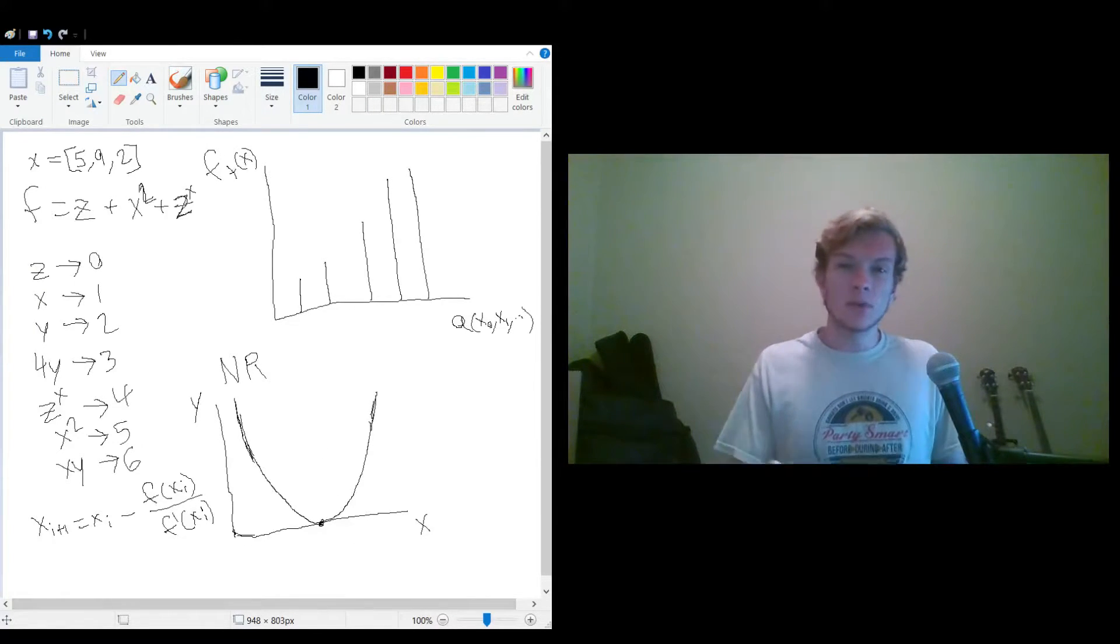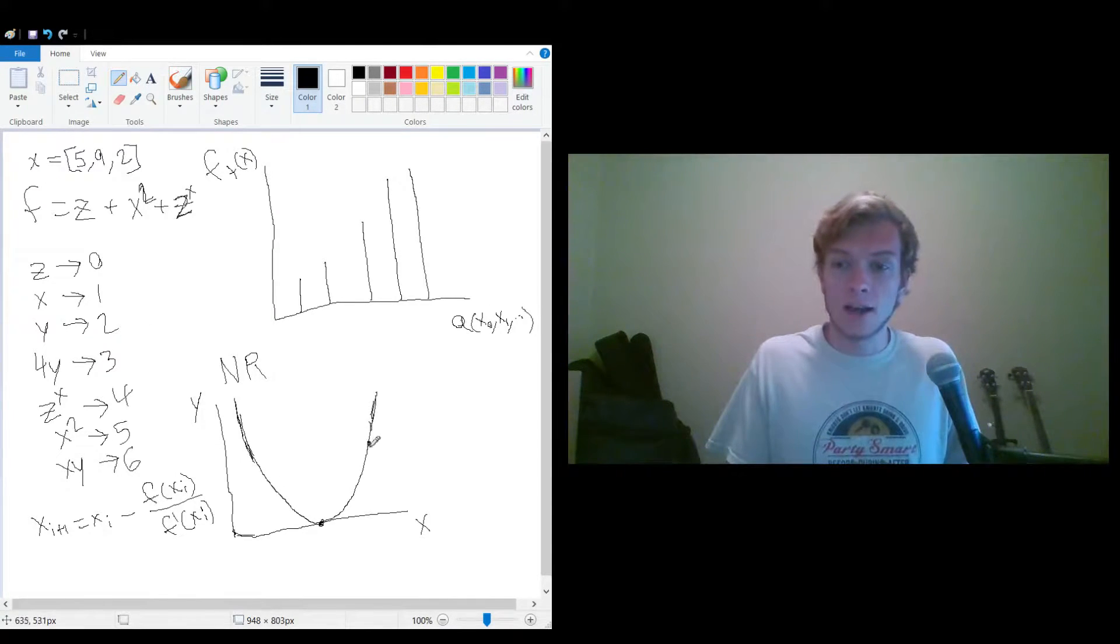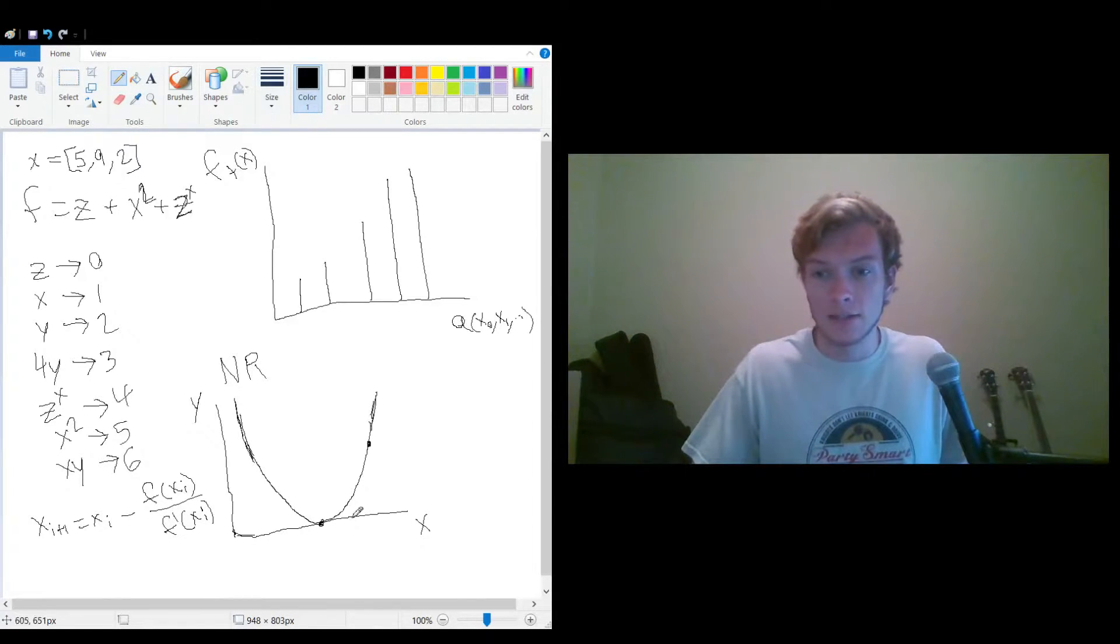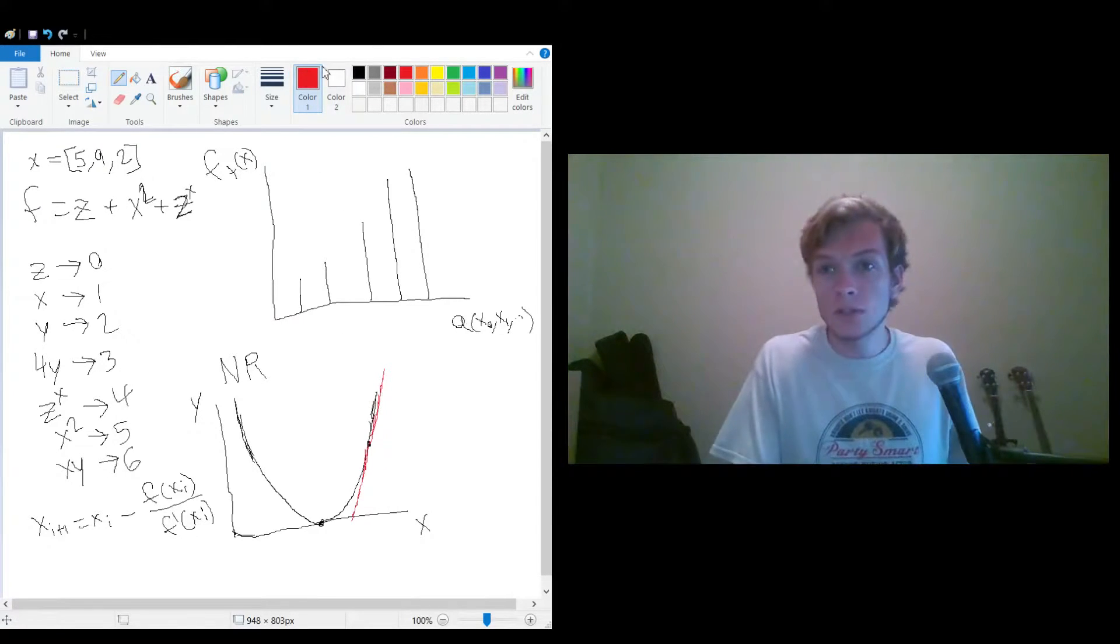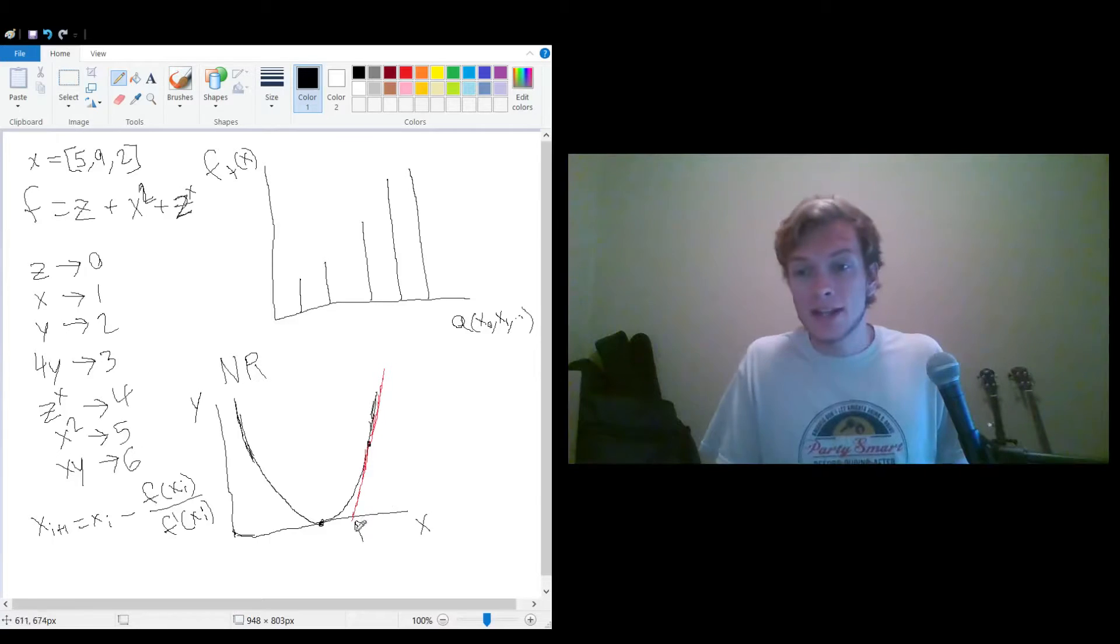And so essentially what this is doing, because that may seem a little bit vague, is let's say we guessed a point here. What this algorithm is doing is it's essentially setting up a tangent line. So I'm going to get a different color here, we'll get some red. And it's looking at the slope of this line right here. And so this goes off in both directions. And so what this does is it looks at the slope, and then it finds where that tangent line hits the x-axis. And where that tangent line hits the x-axis, it then picks that x as the new guess.